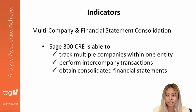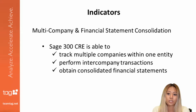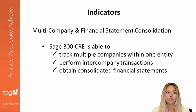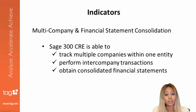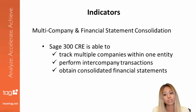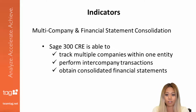The next indicator is fairly straightforward. If your company needs to track multiple companies within one entity and needs intercompany transactions, SAGE 300 CRE offers you that capability, whereas SAGE 100 Contractor does not. Similarly, you'll be able to obtain consolidated financial statements using SAGE 300 CRE, while SAGE 100 Contractor does not offer you this capability.